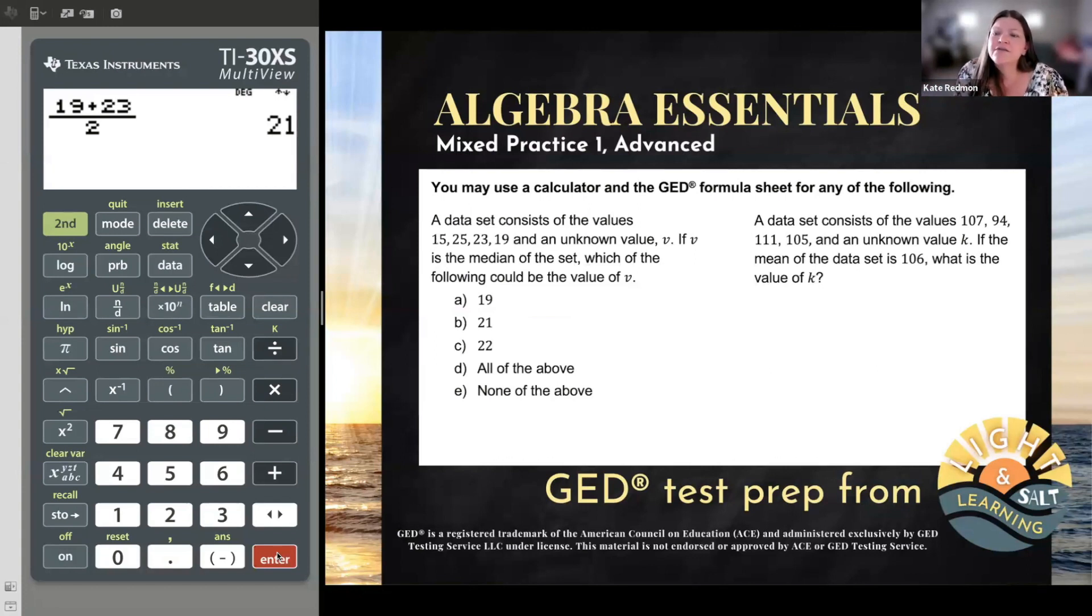Let's look at the next example. A data set consists of the values 107, 94, 111, 105, and an unknown value K. If the mean of the data set is 106, what is the value of K? Now this is a very common GED example. If the first one was maybe flexing some GED skills without necessarily being GED test style, this one is GED test style. And it could happen on your math or even more frequently could happen on your science, where you know the mean, also called the average, and you know some of the items in your data set, but you're missing another one.